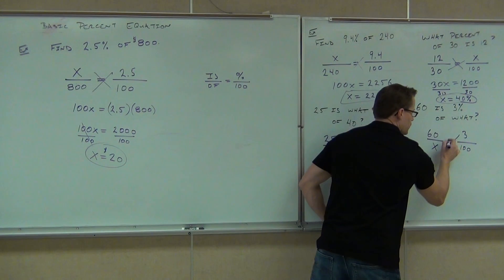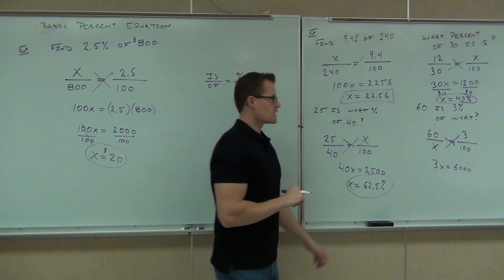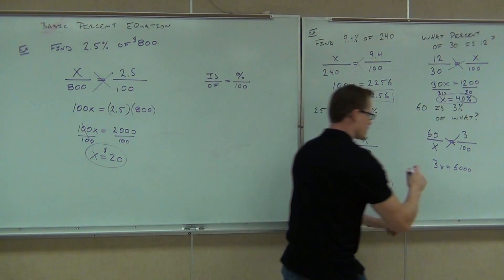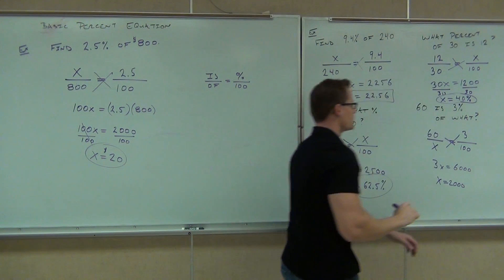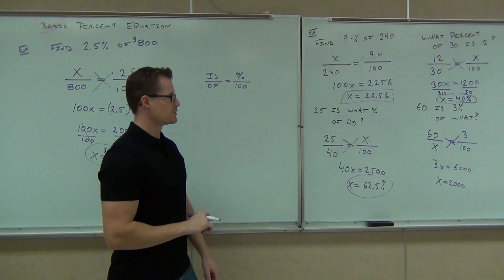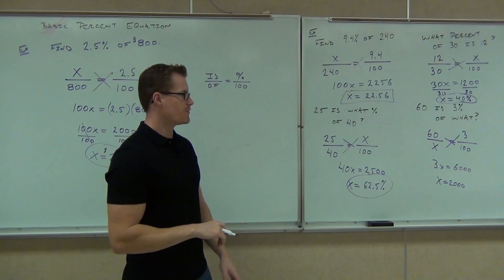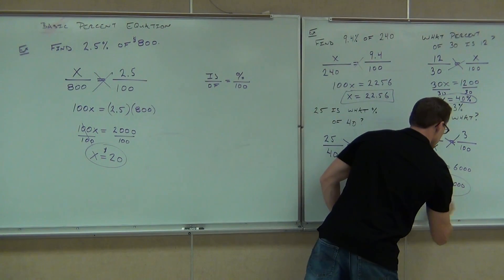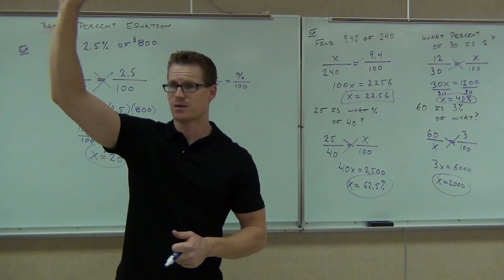Okay, last step. We'll get 3X equals 6,000. If we divide by 3, that 3 on the bottom, we should get 2,000. Dollars. Is that a percent? Dollars. Oh no, it's not. I don't know what the units are. I didn't give you any units. If it would have been dollars, we'd have $2,000. Would you raise your hand if you feel okay finding these percents or finding numbers based on percents? Good deal.